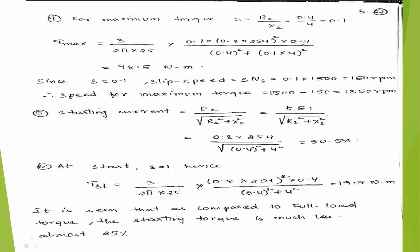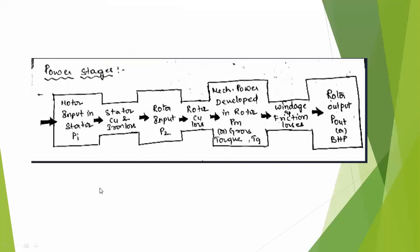For full load torque, use full load slip. For maximum torque, use maximum slip. The remaining formulas are direct substitutions only. Starting torque uses S = 1, starting current also has a direct formula. These are the problems covered.